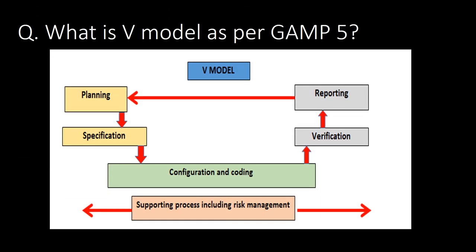What is the V-model as per GAMP-5? Refer to the schematic below for understanding the V-model as per GAMP-5. It starts with planning, then specification, then configuration and coding, then verification, and lastly reporting. From reporting, it may go back to the planning phase, and there will be a continuous support process including risk management throughout.